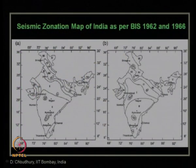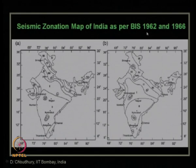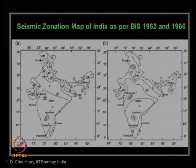Looking at the evolution of the seismic zonation map: figure A shows the 1962 version of IS 1893 part 1. At that time, entire India was subdivided into 6 seismic zones, from zone 1 to zone 6, where zone 6 was the most vulnerable and zone 1 the least.